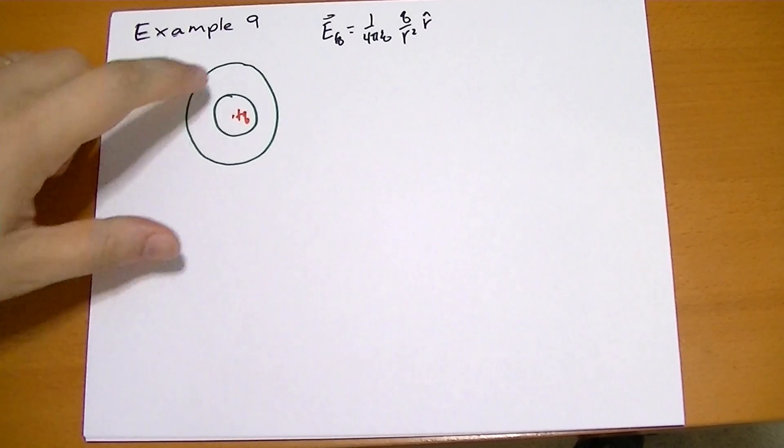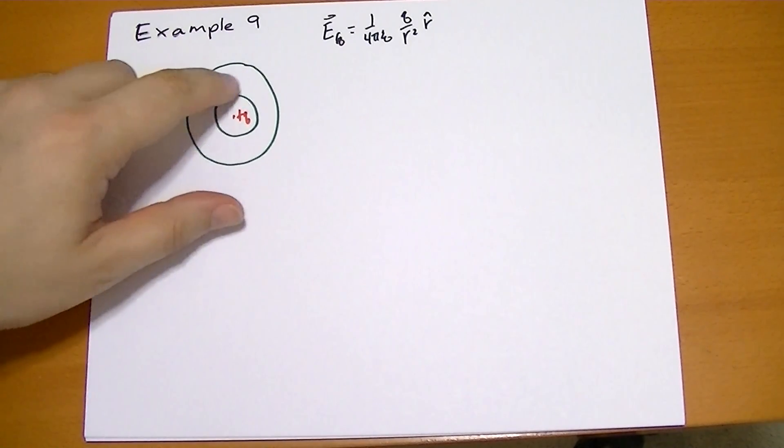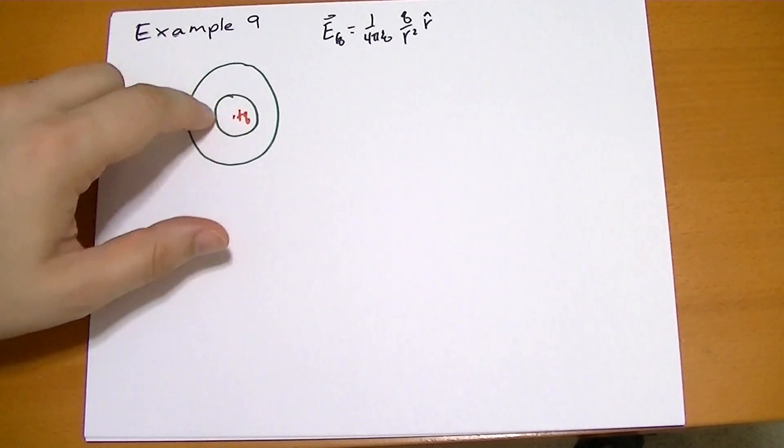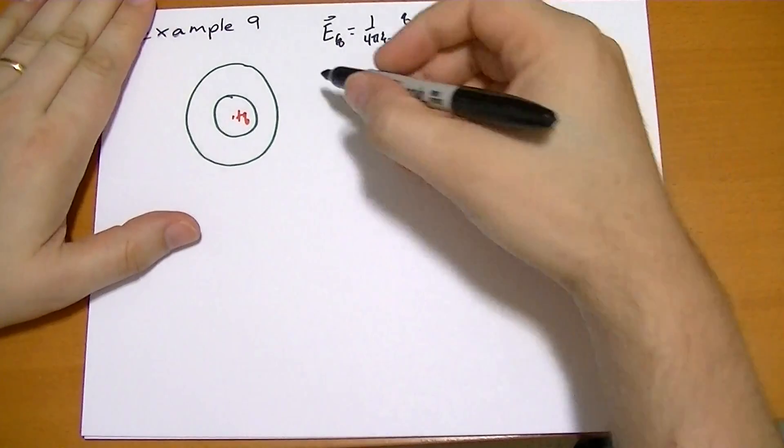Now the electric field on the inside of the sphere has to be zero. So the charge it accumulates on this inside surface has to exactly cancel that out. Now we know that the charge for a shell is the same as the charge for a point.